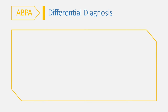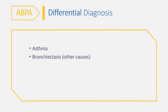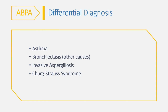What differentials are to be considered for ABPA? Differential diagnosis include asthma, bronchiectasis due to another disease, invasive aspergillosis, Churg-Strauss syndrome, and chronic obstructive pulmonary disease.